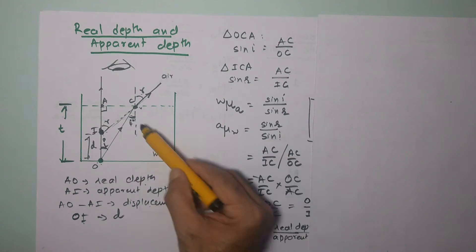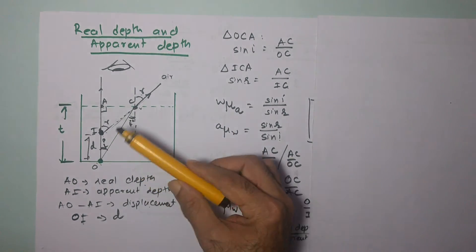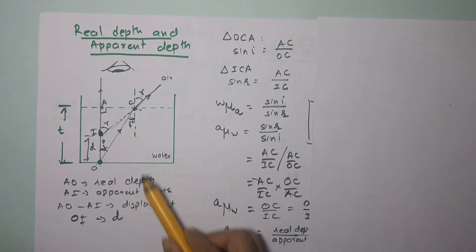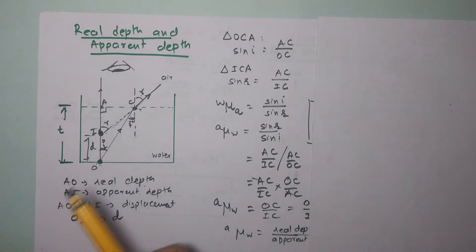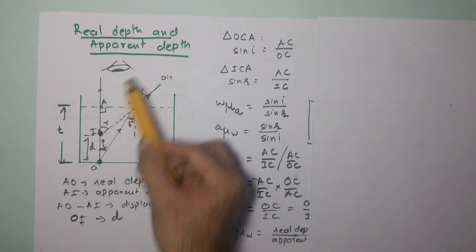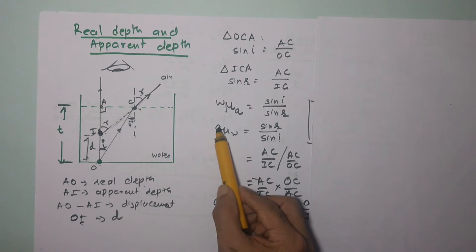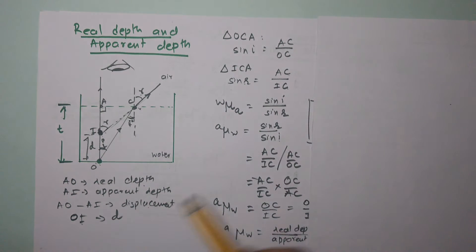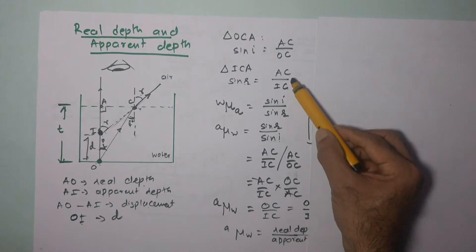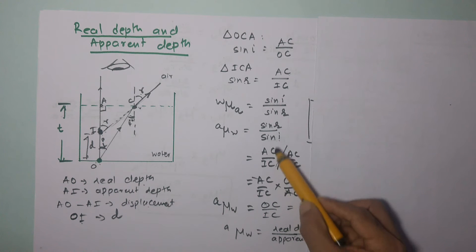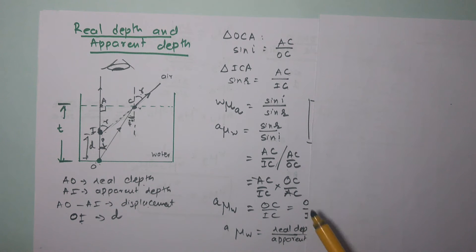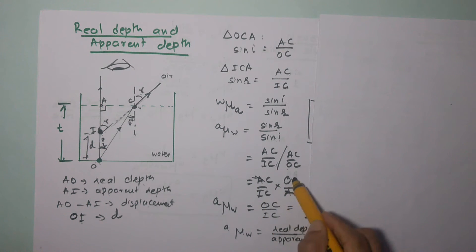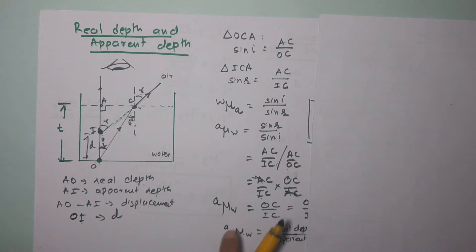We are interested in the refractive index of water, because the phenomenon of real depth and apparent depth is caused by this denser medium. So we want the refractive index of the denser medium with reference to the rarer medium. By the principle of reversibility, the refractive index of water with respect to air is sine r upon sine i. Substituting: sine r is AC upon IC divided by sine i which is AC upon OC, so AC cancels and we get OC upon IC. Therefore, the refractive index of water with reference to air equals OC upon IC.